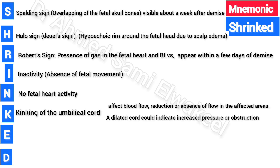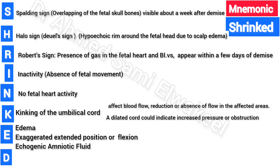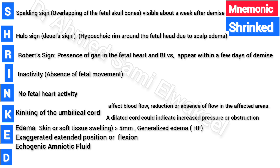A dilated cord could indicate cord edema. Additional signs include an exaggerated fetal position and echogenic amniotic fluid. Edema refers to skin or soft tissue swelling greater than 5 mm.